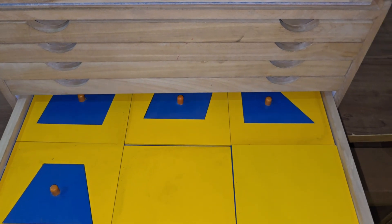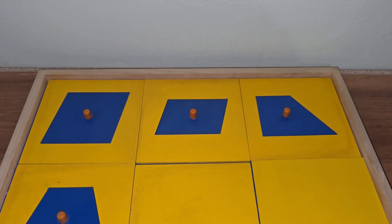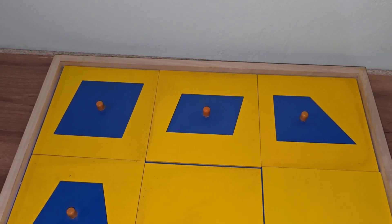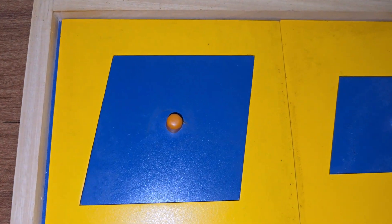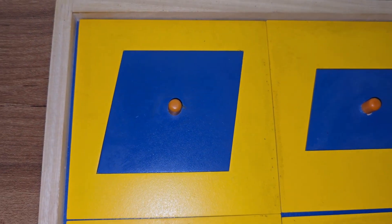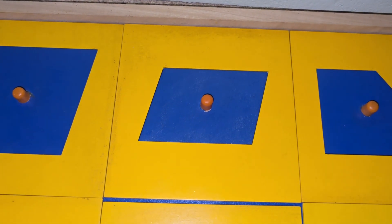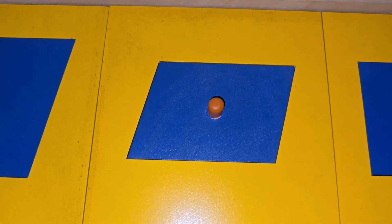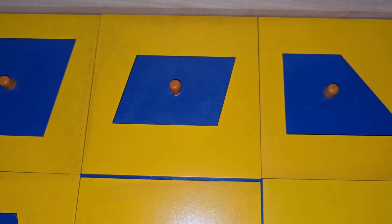Our next drawer comes with four quadrilaterals. A quadrilateral is defined as a two-dimensional shape with four sides. Here we have rhombus, parallelogram, right-angle trapezoid, and isosceles trapezoid.